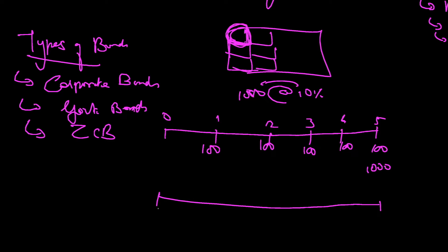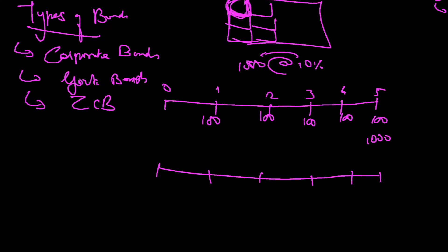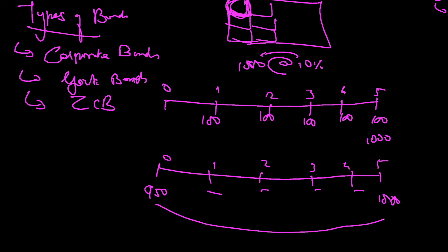In a zero coupon bond, the company will not pay any interest payments — 0, 1, 2, 3, 4, 5 — nothing along the way. At the end they will pay 1,000. However, when they are issuing this bond, they will issue it at a discounted price — say, 950. This 50 is the income, the return for the investor, which he is going to get at the end.